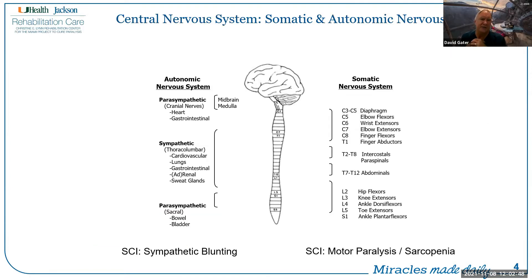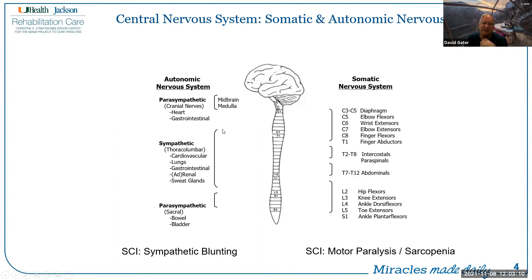Just as a reminder, the central nervous system is comprised of both somatic and autonomic nervous systems — they are integrated at the level of the cord. The parasympathetic nervous system arises from cranial nerves and sacral nerves, and then you have the sympathetic nervous system, which begins in the spinal cord in the thoracolumbar regions. After high spinal cord injury, you're likely to see sympathetic blunting, and that's in addition to the somatic nervous system motor paralysis, depending upon level and completeness of the injury.